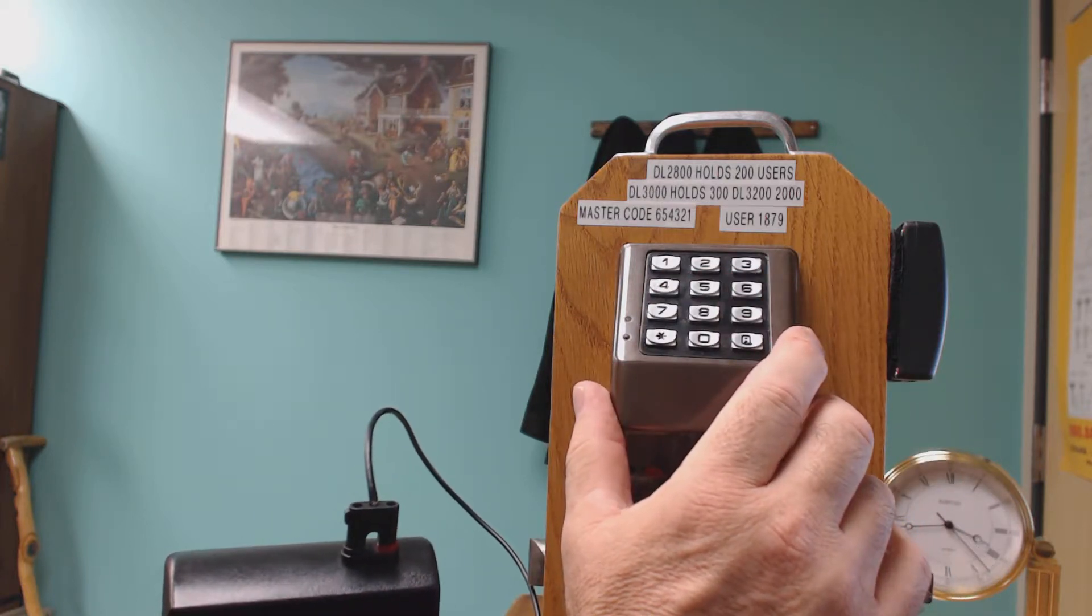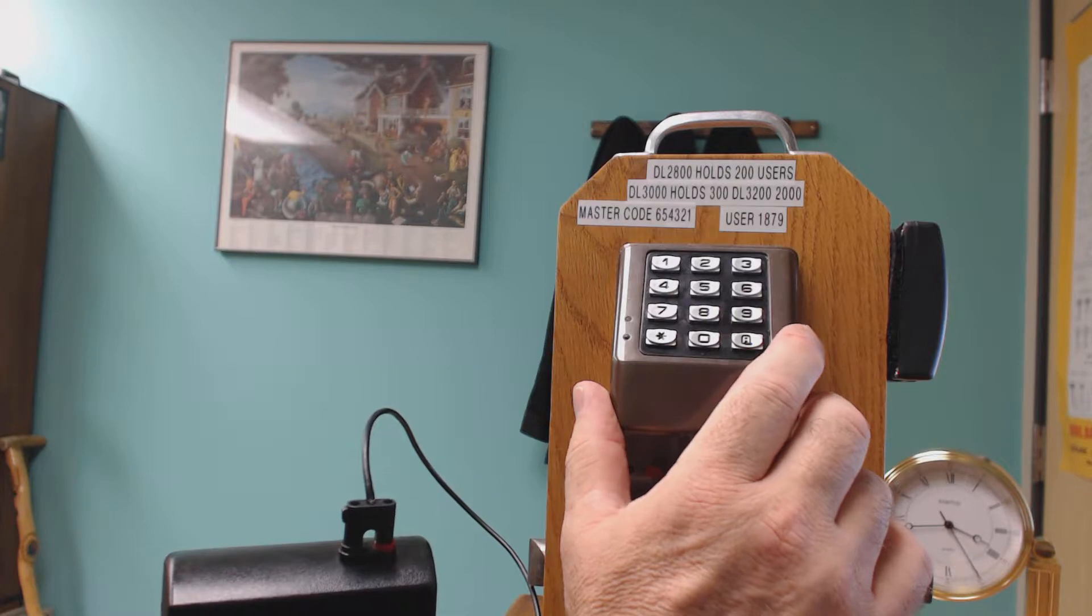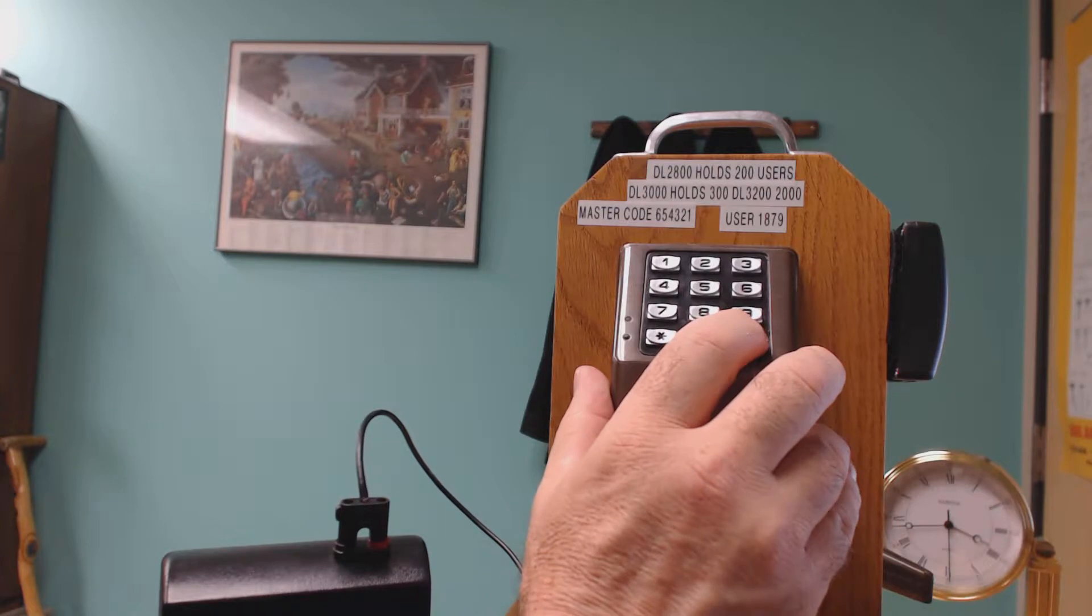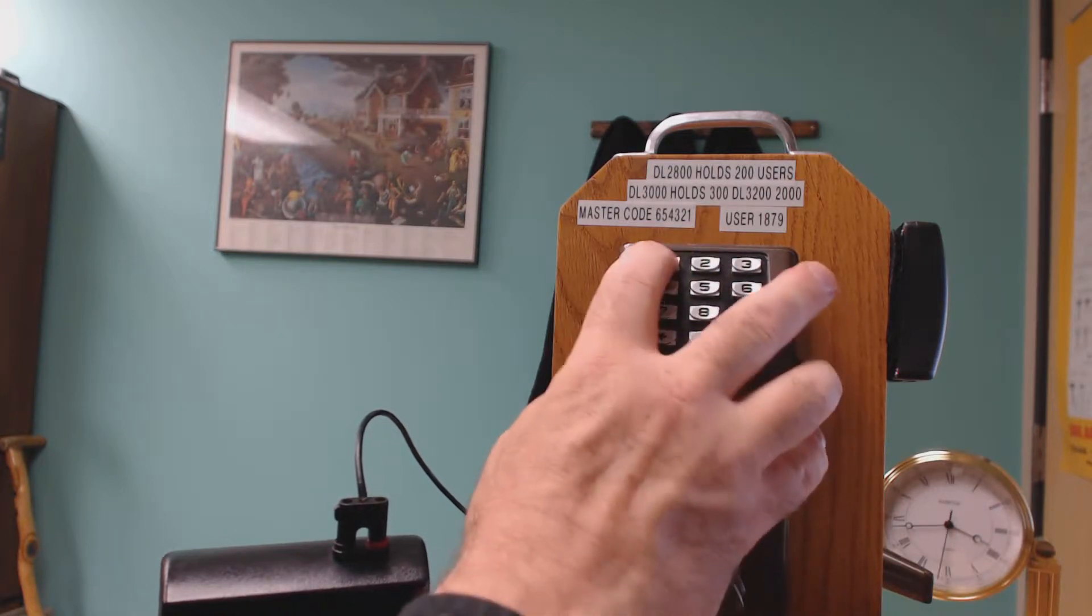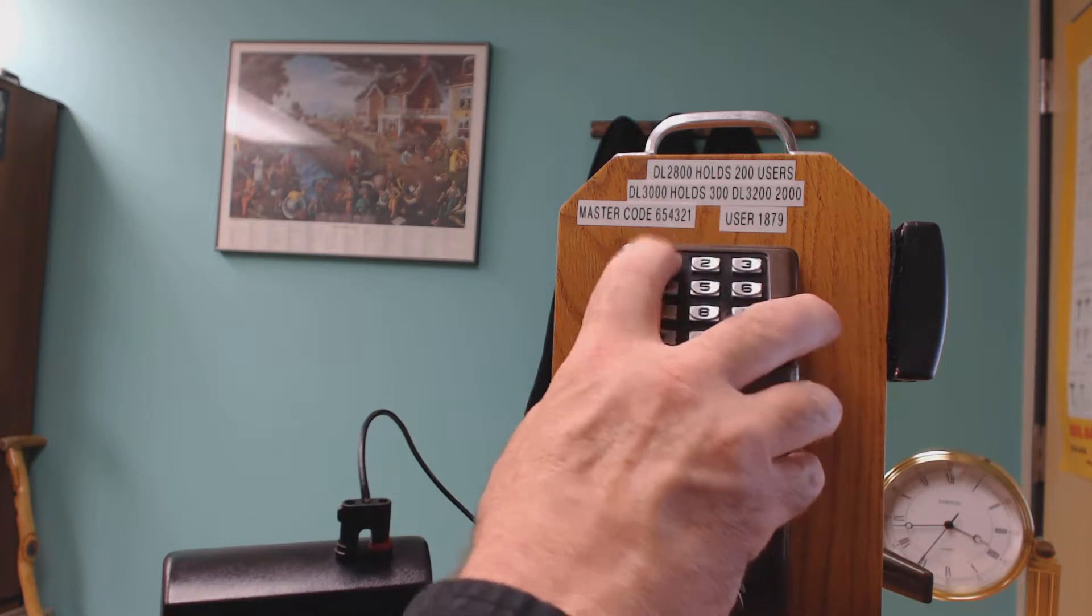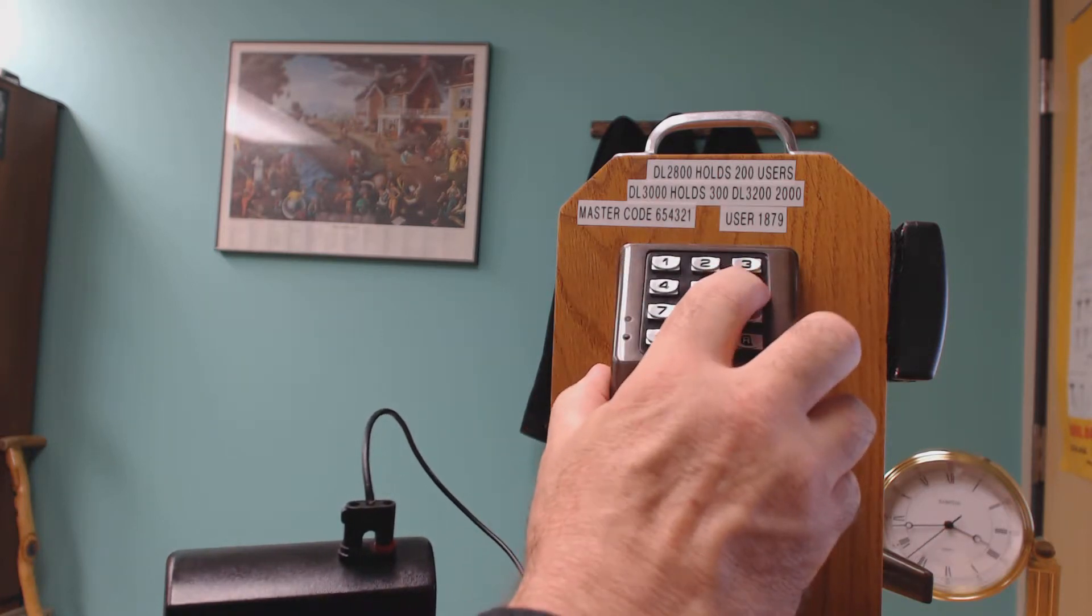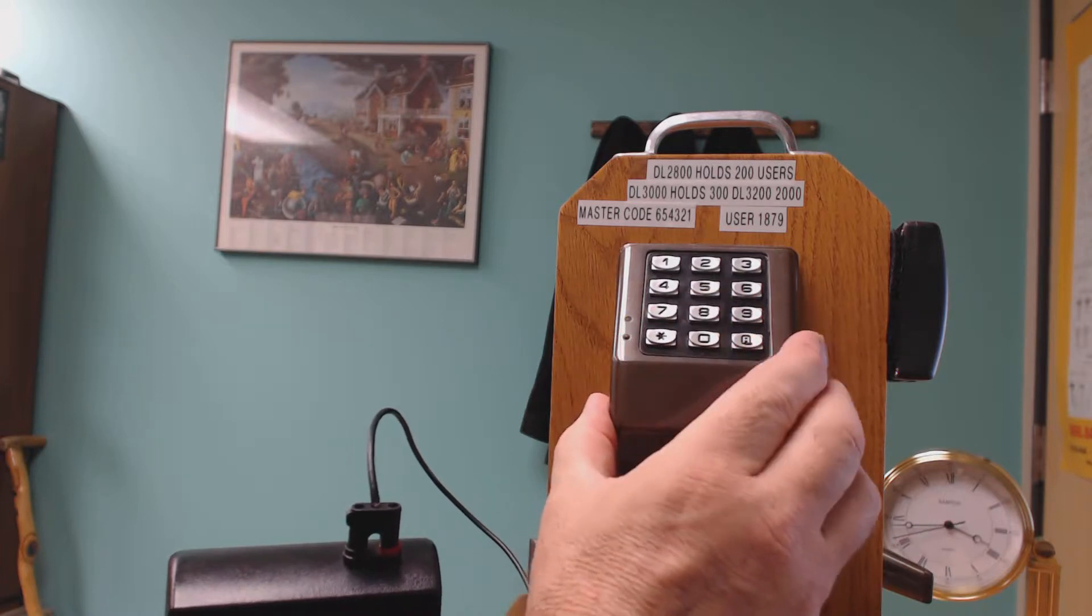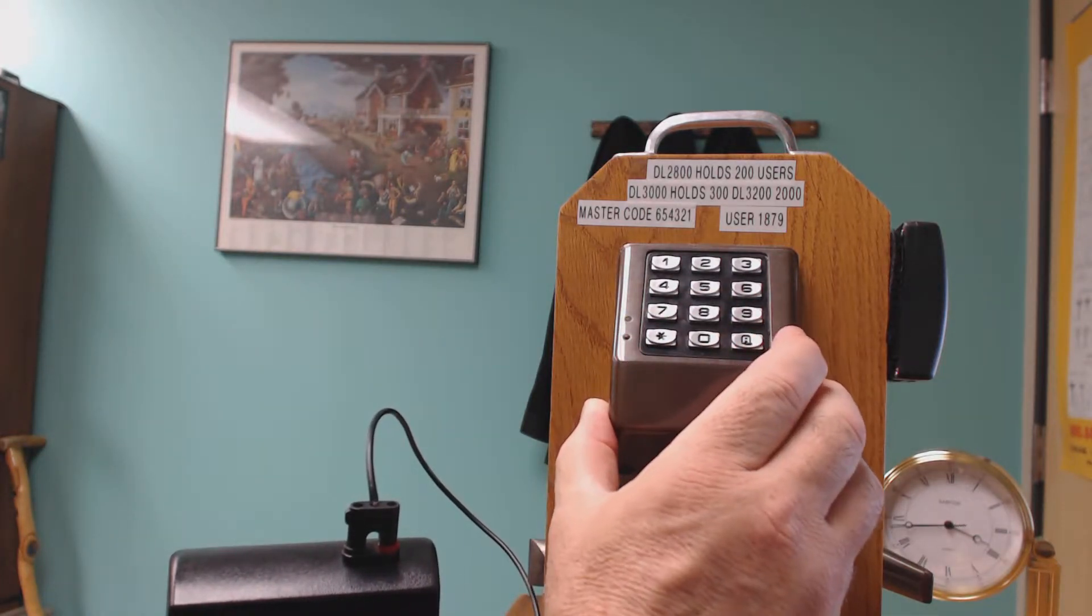The program function for the master code is one, which you've got to do twice. So here we go: A, one, A, master code six numbers, A, six numbers again same one, star, all done.